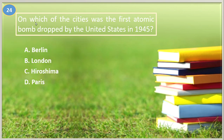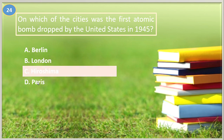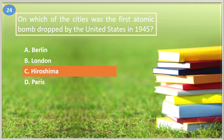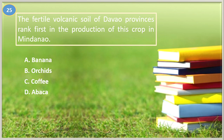Number twenty-four. On which of these cities was the first atomic bomb dropped by the United States in 1945? A. Berlin, B. London, C. Hiroshima, D. Paris. The answer is letter C, Hiroshima, Japan — the first atomic bomb dropped by the U.S.